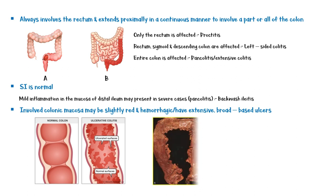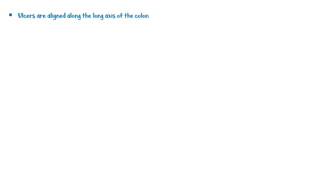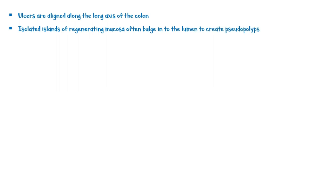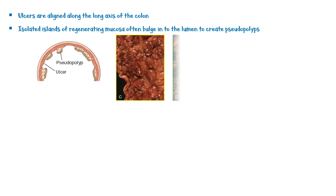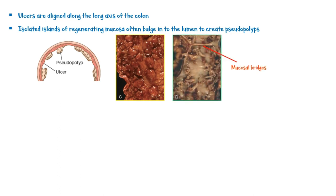Here is a gross image of a colon with ulcerative colitis. Ulcers in ulcerative colitis are aligned along the long axis of the colon. Isolated islands of regenerating mucosa often bulge into the lumen to create pseudopolyps, as you can see in this picture. Tips of these polyps may fuse to create mucosal bridges, as you can see in this picture.